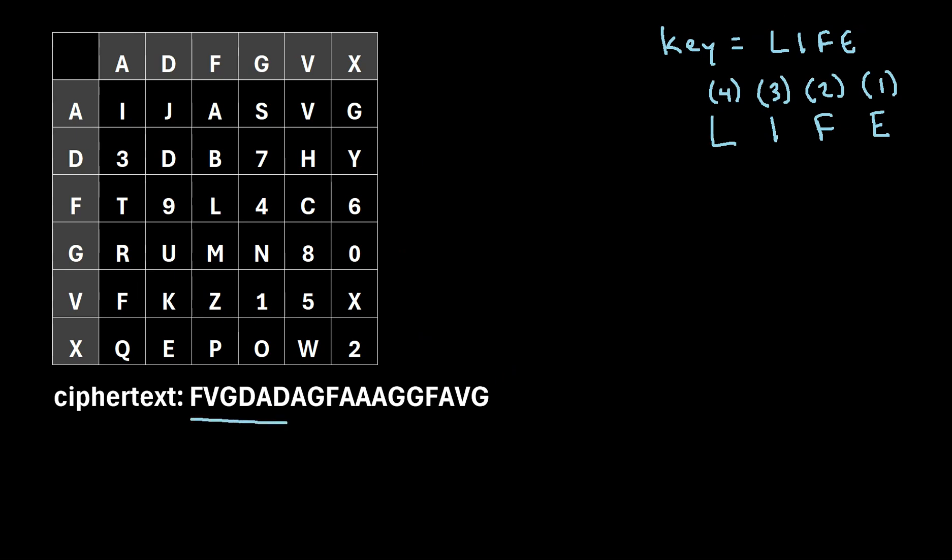The next step is we want to write out this ciphertext within this keyword grid right here. And the way that we're going to do that is we first need to count how many characters are actually in this ciphertext. So if you count out these characters, you'll find there's 18 total characters. Next, you need to divide that by the number of characters in the keyword. So there are four characters in life. So 18 divided by four.